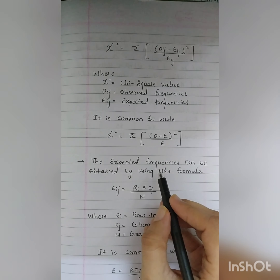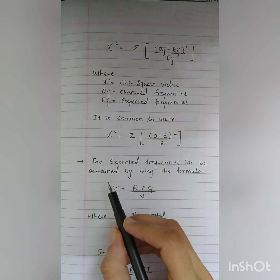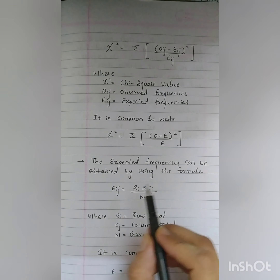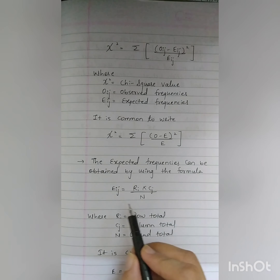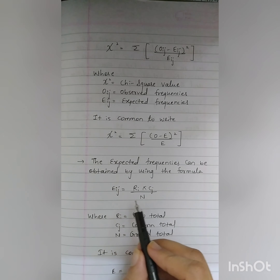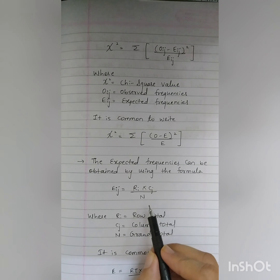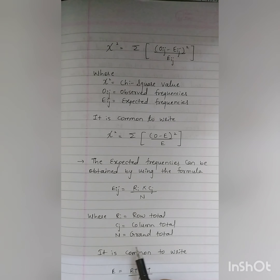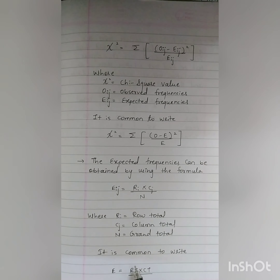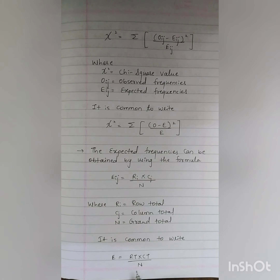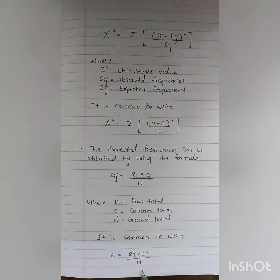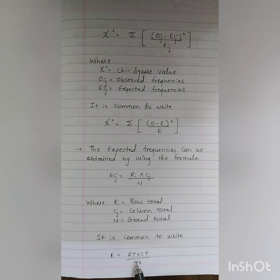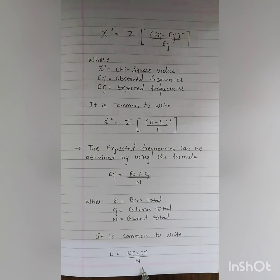How do we find the expected frequency? The expected frequency can be obtained using the formula: Eij equals Ri times Cj divided by N, where Ri equals the row total, Cj equals the column total, and N equals the grand total. It is common to write this as E equals RT times CT divided by N, where RT equals row total, CT equals column total, and N is the grand total.